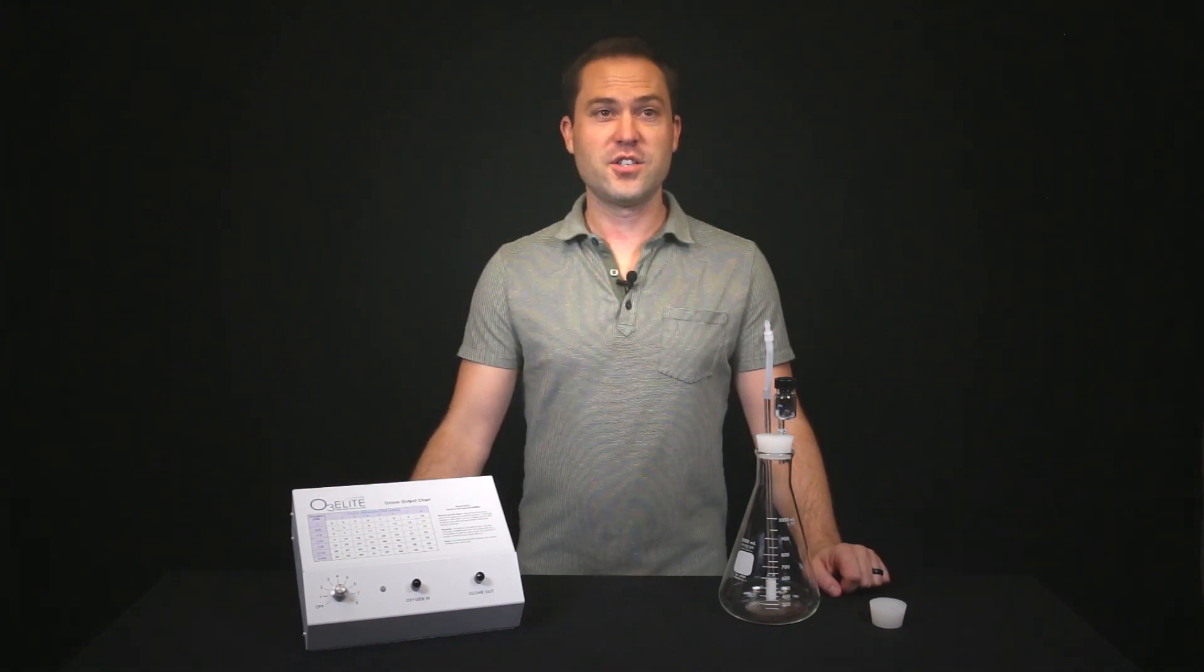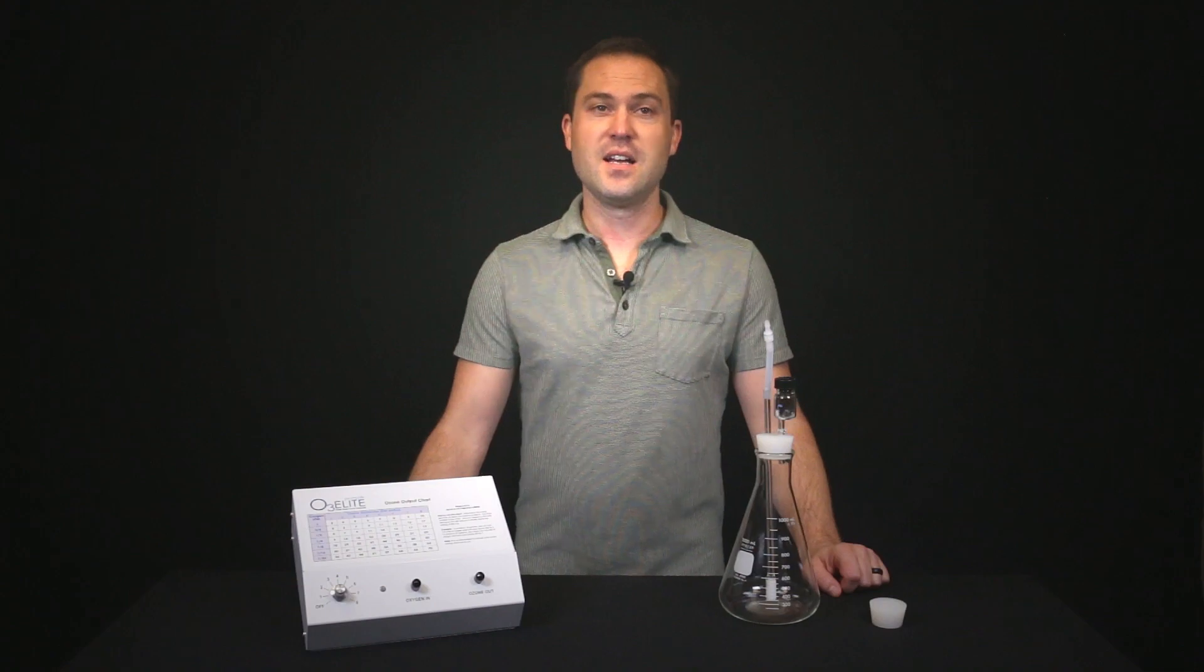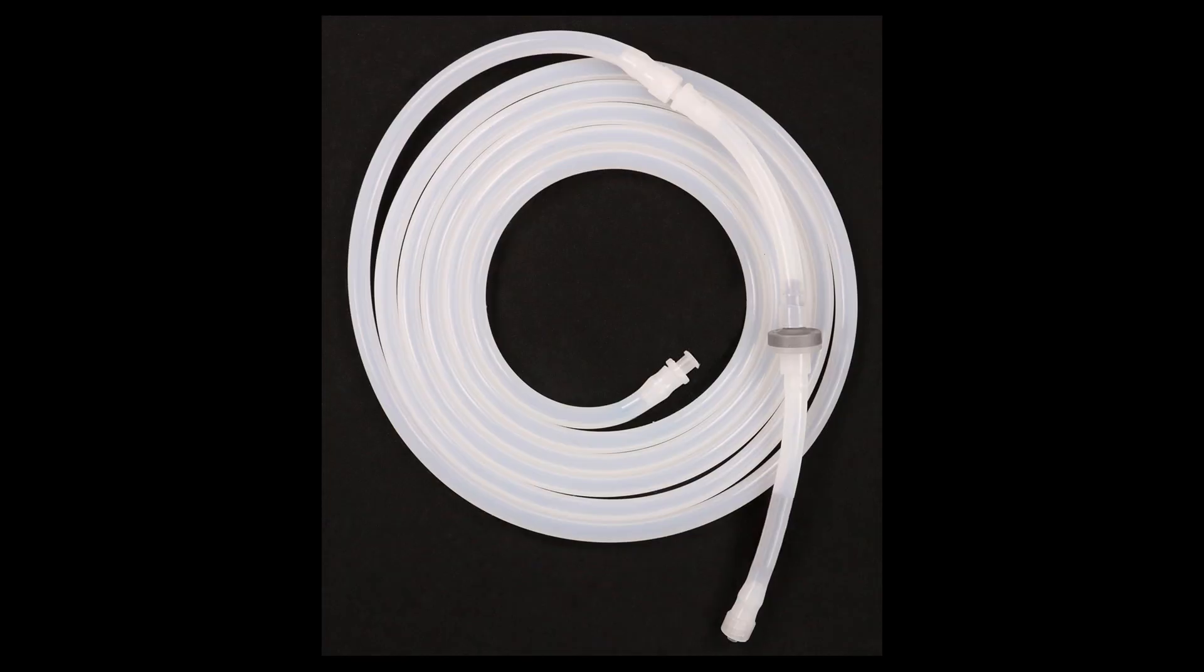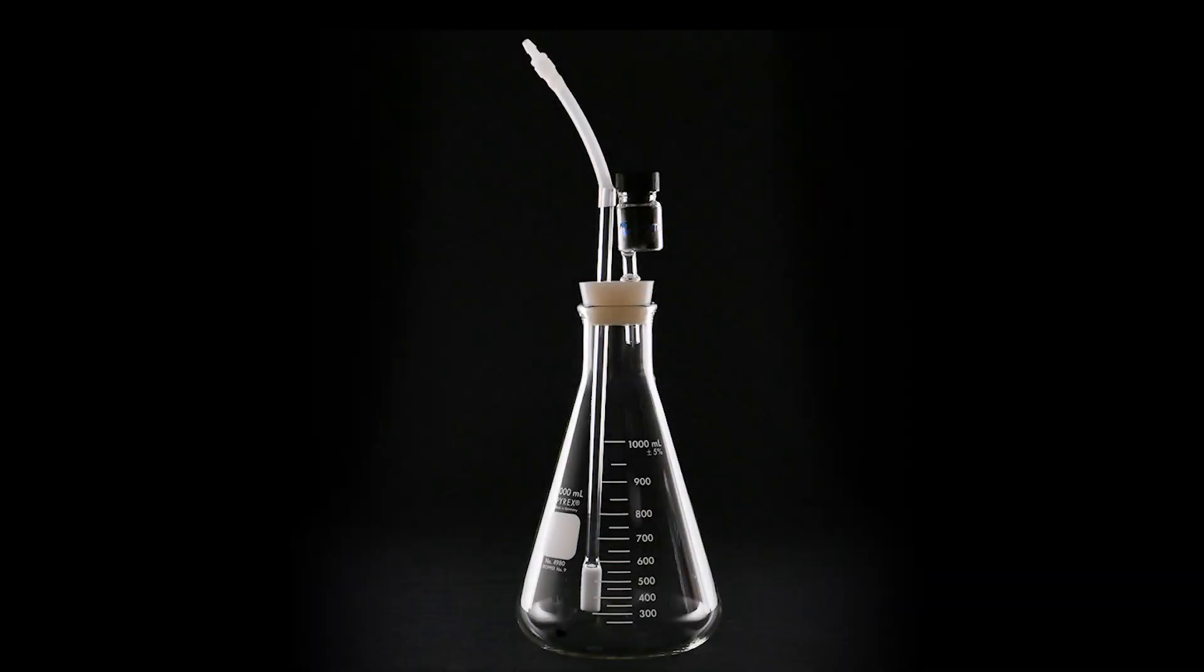To begin, first make sure you have all the accessories needed. These include an O3Lite single ozone generator, tubing with a check valve attached to 5 feet of silicone tubing, and an ozone water bubbler. There should also be an ozone destruct system with a glass straw attached to a silicone stopper, as well as an extra silicone stopper with no openings.